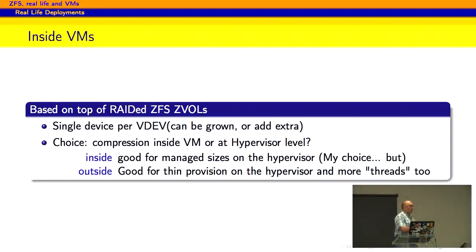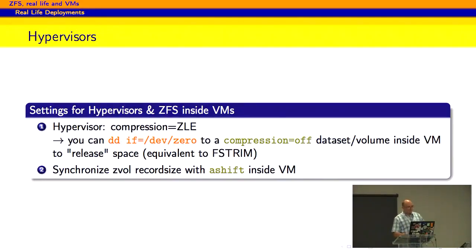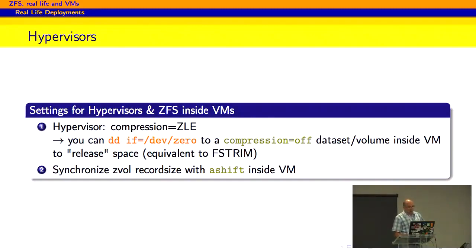I prefer compression inside the VM for my Postgres and other things, for the backup features, so I just extra-provision those VMs with extra threads. On the hypervisor side, the compression I use is ZLE — for the simple reason that the stuff is already compressed inside my VMs, so I don't need to redo that. When you have VMs that do not make use of ZFS, then you can enable compression on those and get the performance and benefit. One thing to remember: synchronize your ZVOL record size with the A-shift inside the VM, so you have a similar block size from top to bottom.